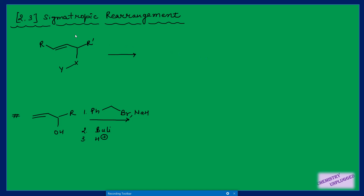Welcome back to my channel. In today's video we will cover [2,3]-sigmatropic rearrangement reactions. We have an allylic system attached to an XY system, where X can be oxygen, sulfur, or nitrogen. When X is oxygen, it is called the [2,3]-Wittig rearrangement, and when it is sulfur or nitrogen, it is called Stevens rearrangement.